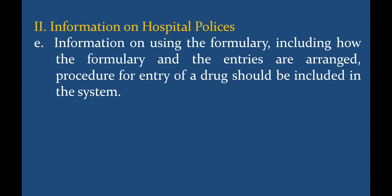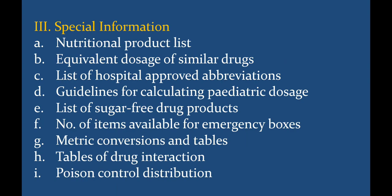Then there is information on how to use the formulary, and the procedure for entry of a drug should be included in the system. Next is special information, which includes: the nutritional product list; equivalent doses of similar drugs; the list of hospital-approved abbreviations; guidelines for calculating pediatric doses; the list of sugar-free drug products; number of items available for emergency boxes; metric conversion tables; tables of drug interactions; and poison control distribution.